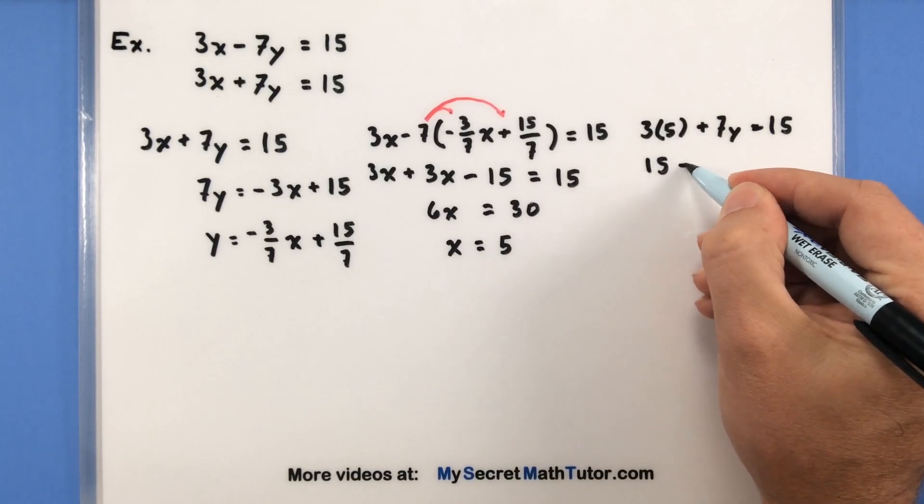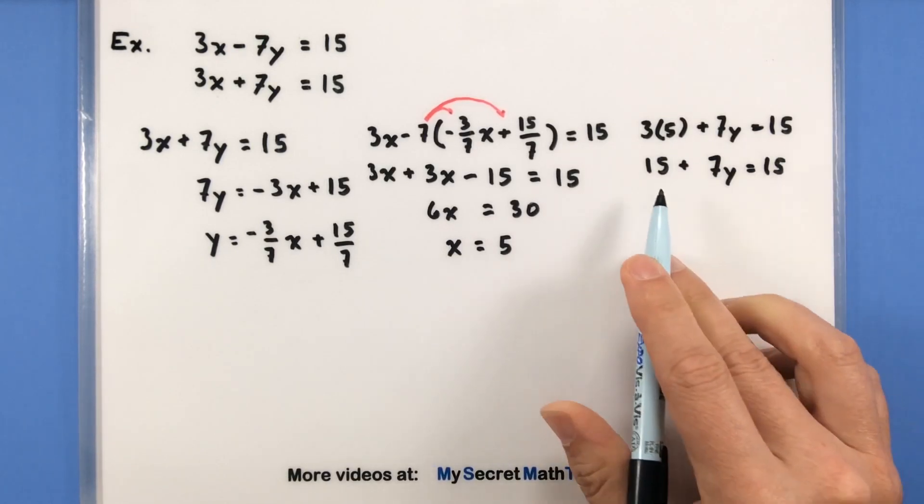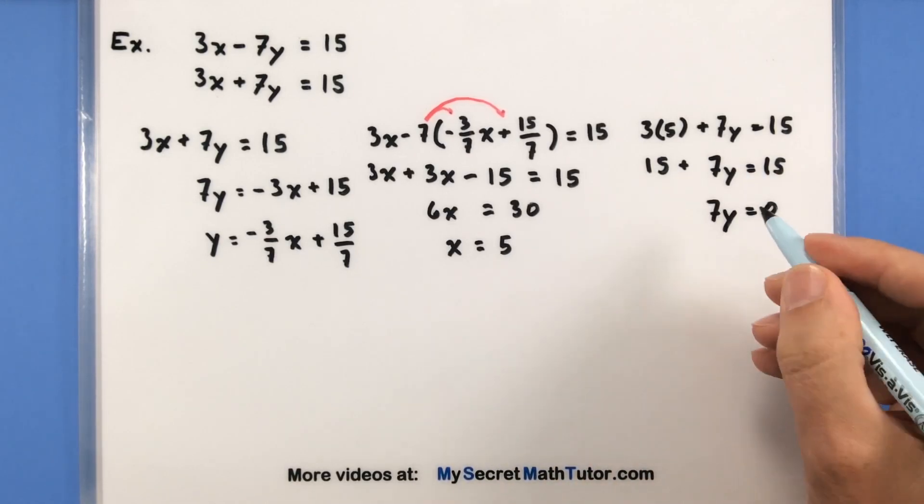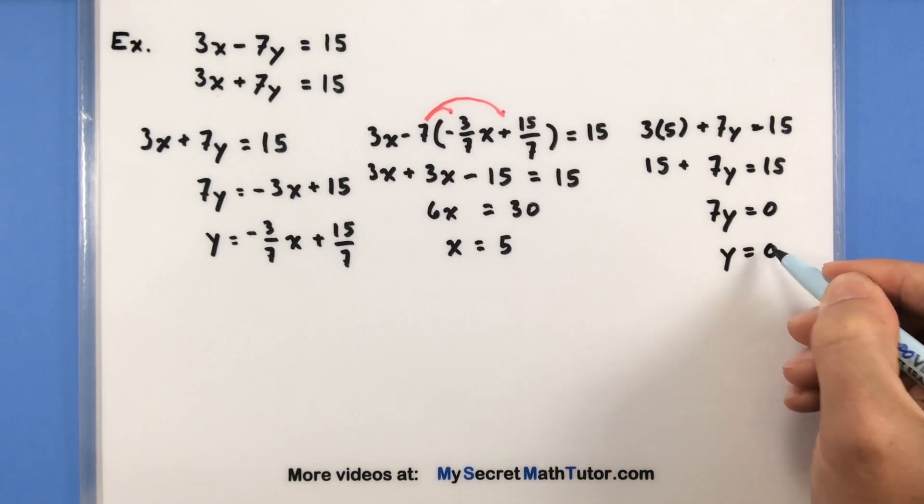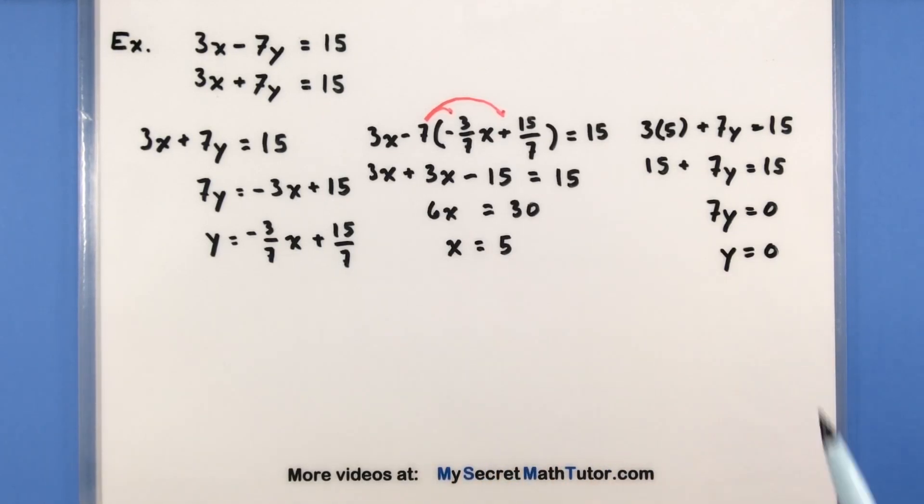So 3 times 5 is a 15. Subtract 15 from both sides. This will just say 7y is equal to 0. Divide both sides by 7, and we have y is equal to 0. So this has a solution of x equals 5 and y equals 0.